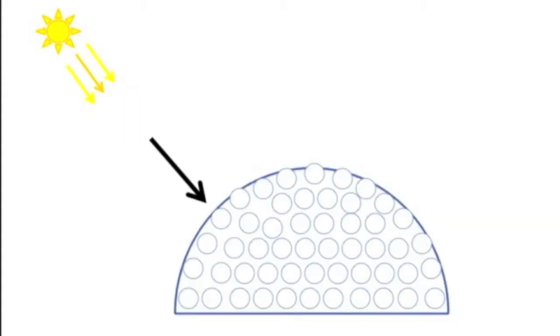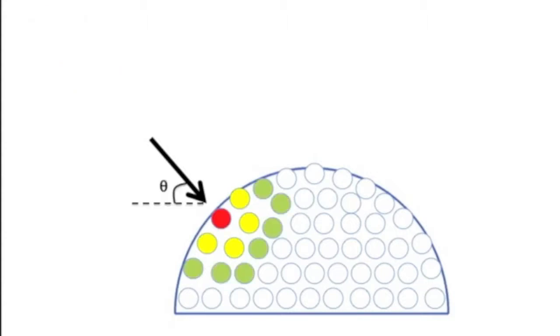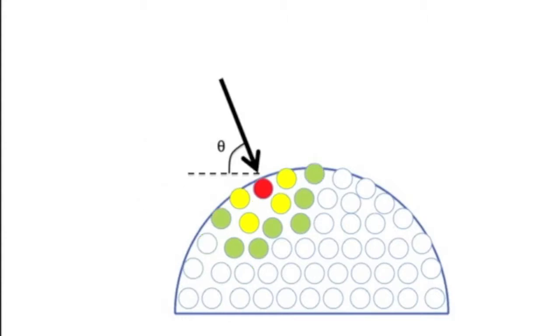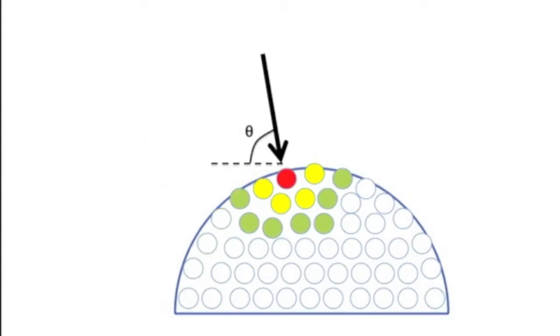Insolation data can be calculated by summing the output of photoresistors in a certain area. The angular direction of the light can be calculated by comparing the output of adjacent photoresistors and finding the power gradient.